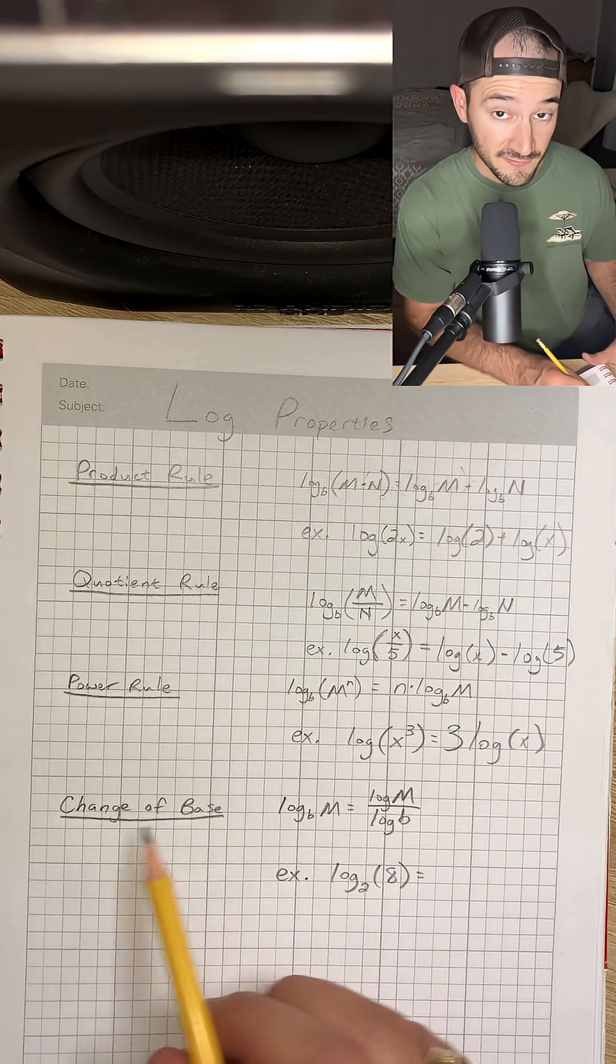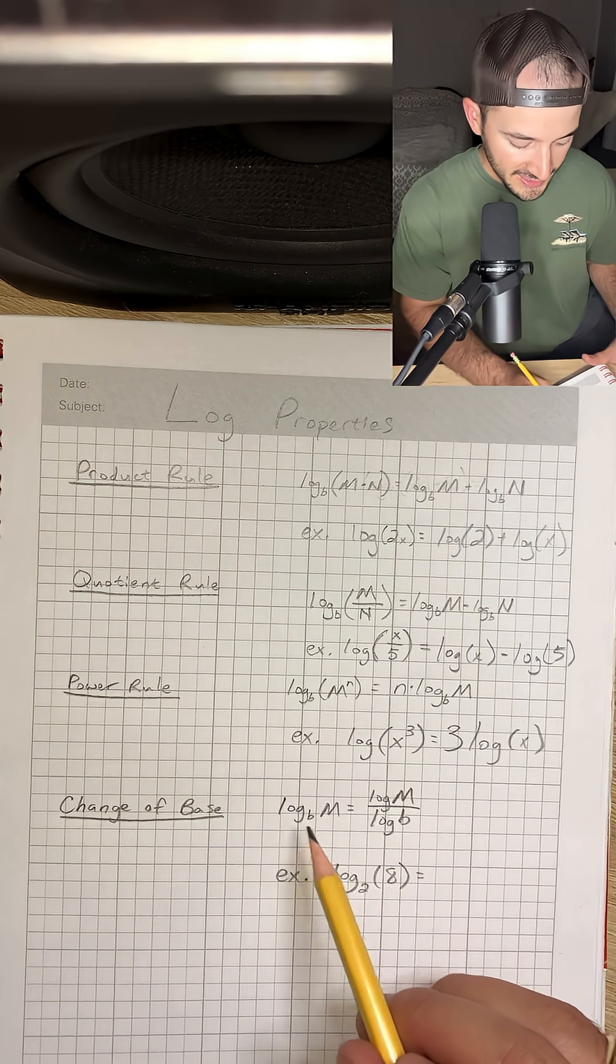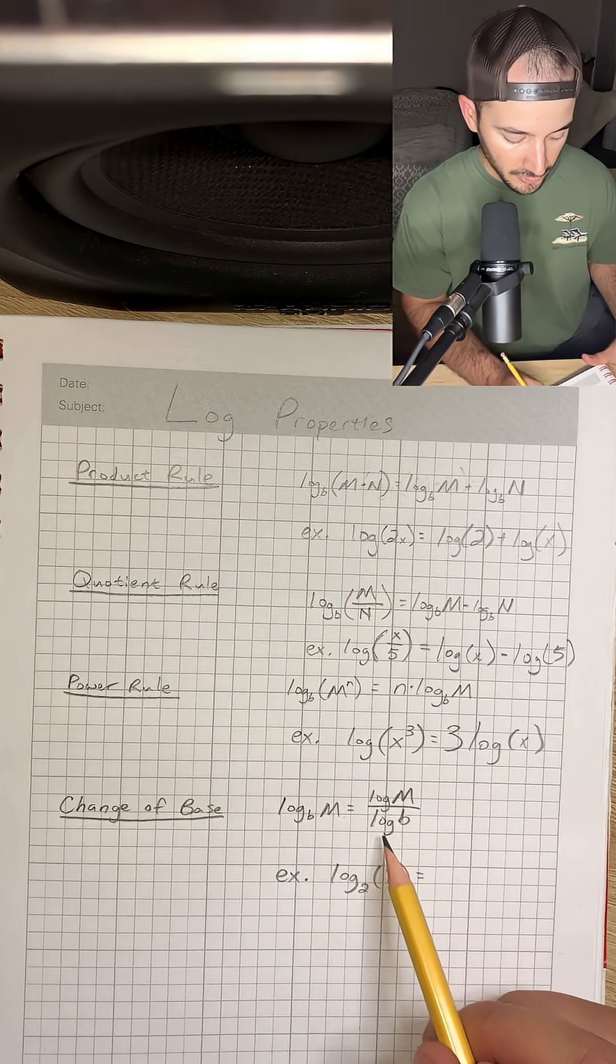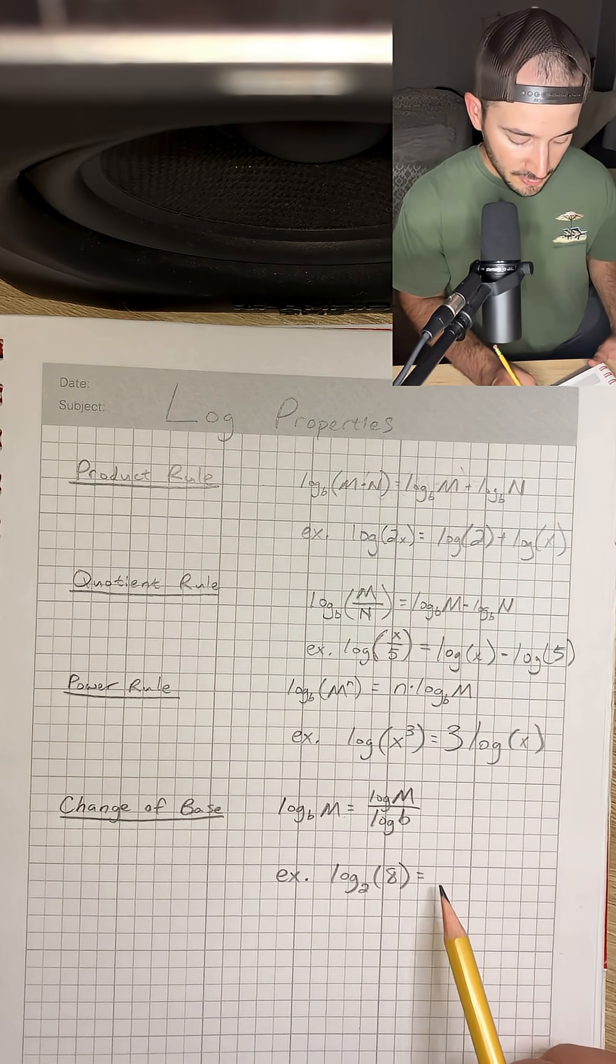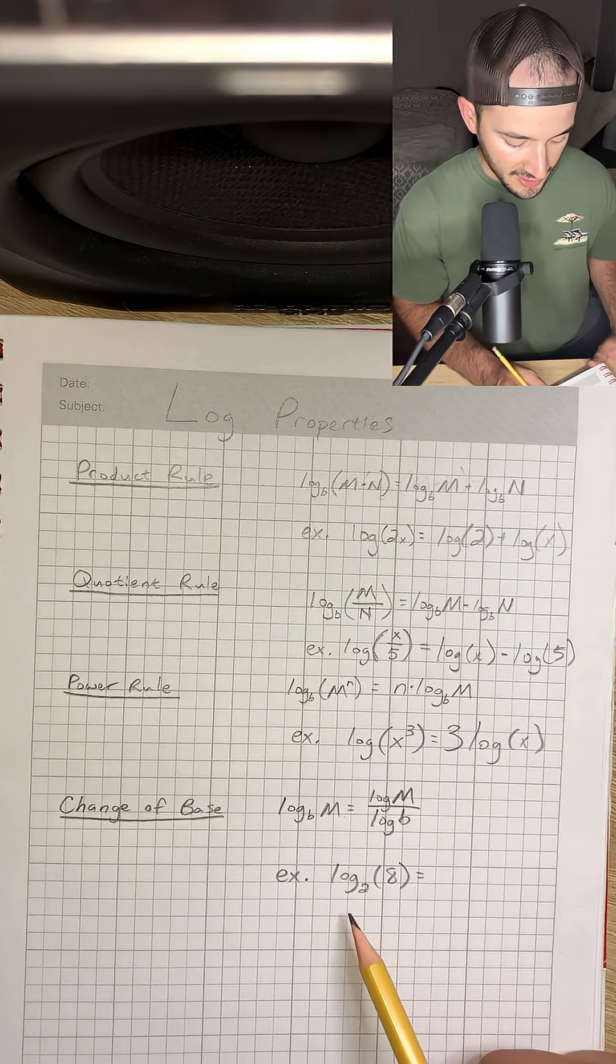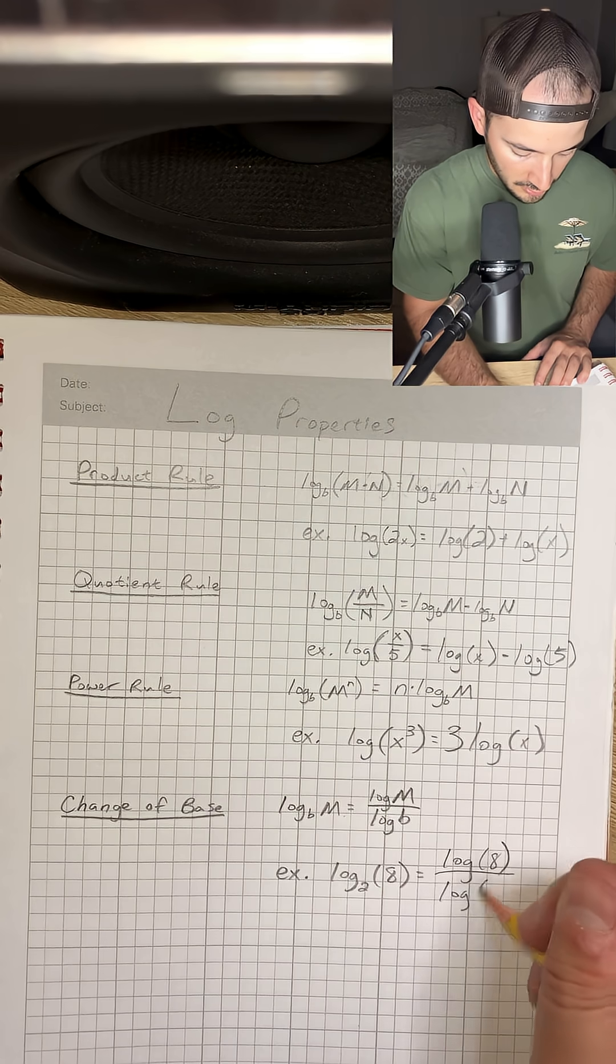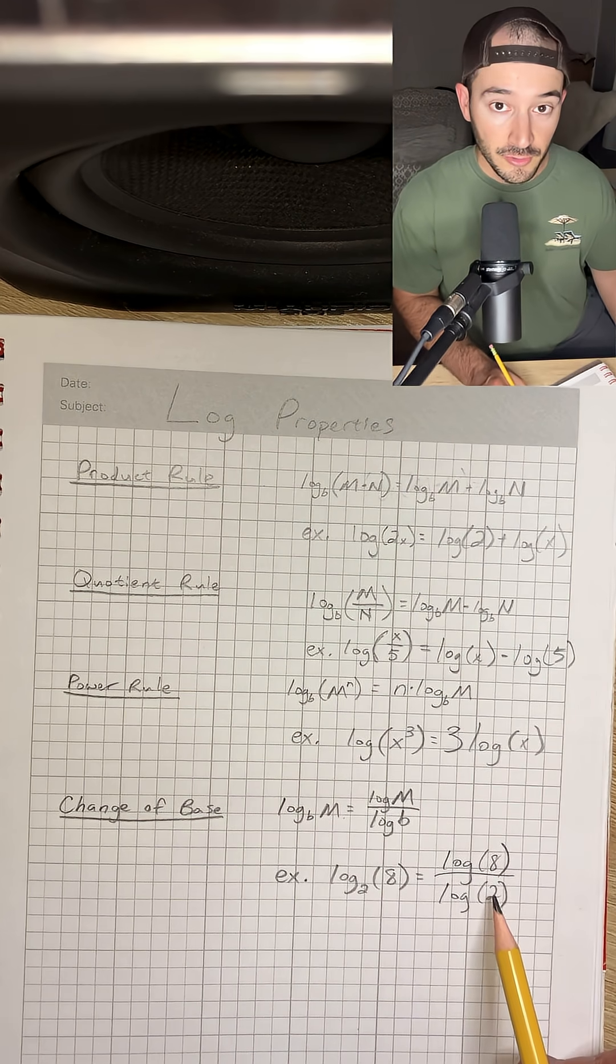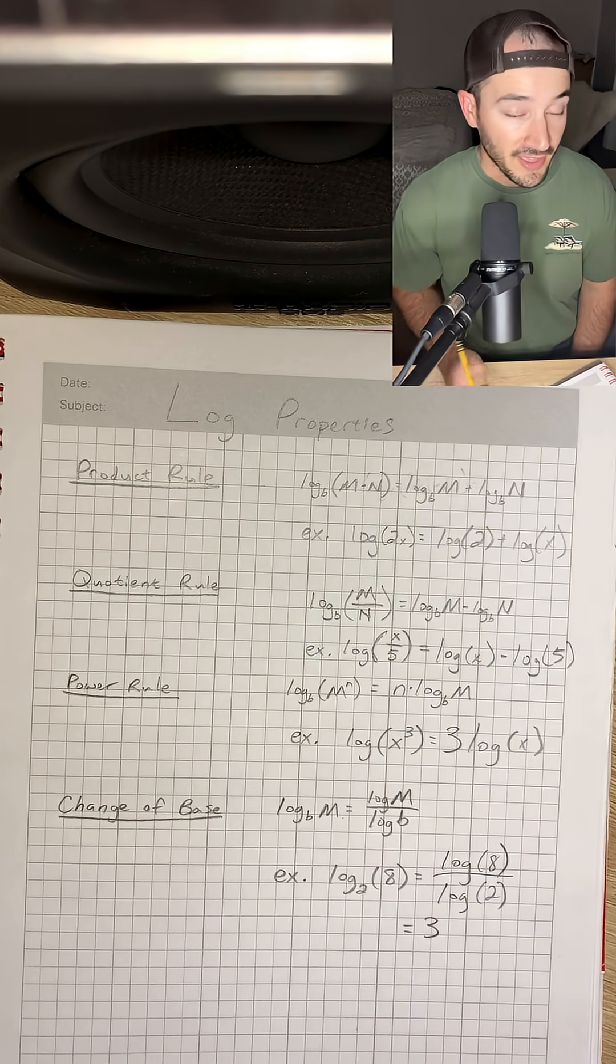Lastly, we have our change of base rule, and that's log base b of m is equal to log m over log b. So let's say they gave us log base 2 of 8. We could rewrite that as log 8 over log 2. If you put log 8 over log 2 into your calculator, you should get an answer of 3, and that is all you have to do.